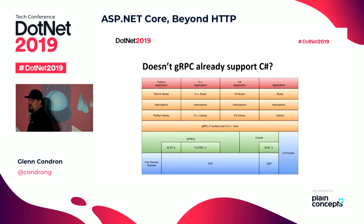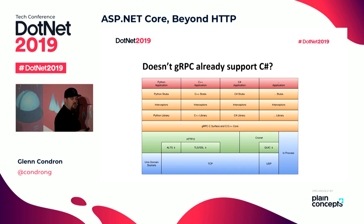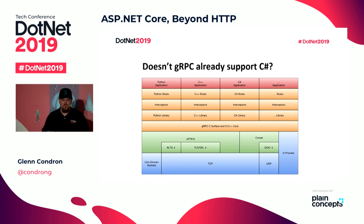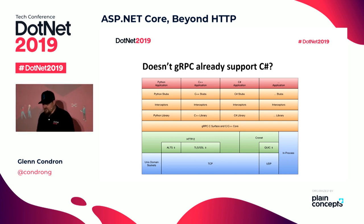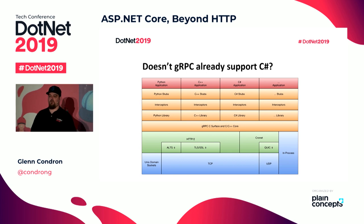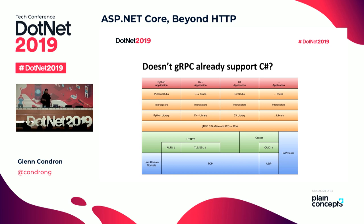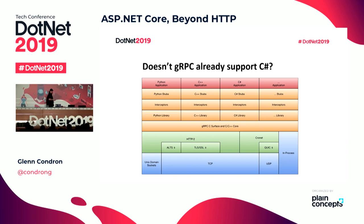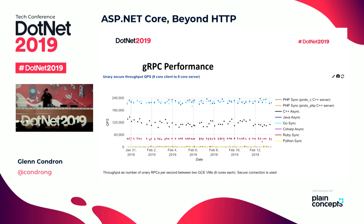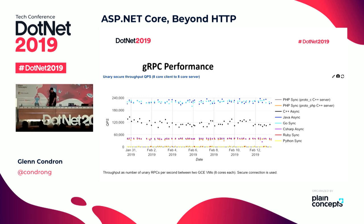Doesn't gRPC already work on C#? The answer is — yeah, it kind of does. Google has a C# library, and it's built around a native C core. All of these languages are basically wrapping and P/Invoking into this native C library which does all the heavy lifting of doing gRPC. We were doing some benchmarking and this is what we found — that black line in the middle on its own is C++. Everything underneath it are all the libraries that P/Invoke into the native C and C++ library.